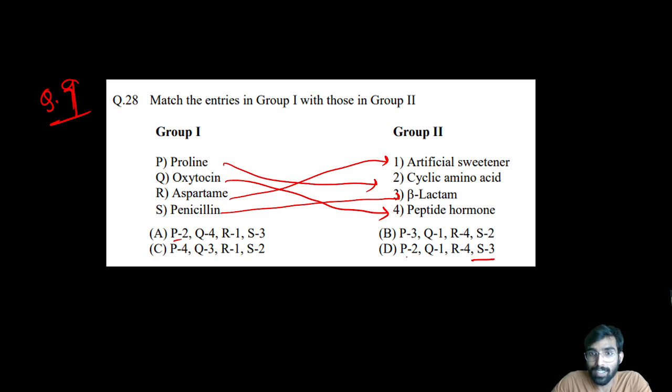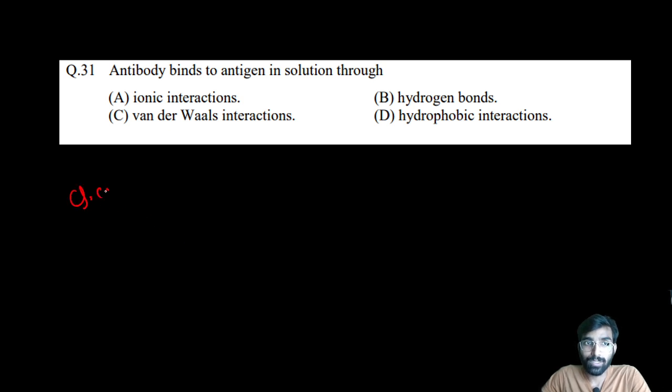Final question: Antibody binds to antigen in solution through ionic interaction, van der Waals interaction, hydrogen bond, or hydrophobic interaction? When antigen-antibody binding happens, which bonds are responsible? Imagine the antigen-antibody binding and try to recall. Here every bond is responsible because the antigen-antibody interaction is due to non-covalent interaction, so every bond mentioned here is non-covalent and is possible. That's also an MSQ. Along with that, we are done with 10 questions.